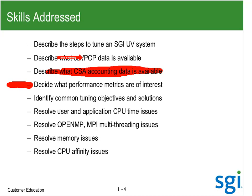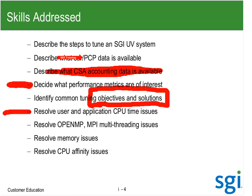One of the key things I want to be able to do is identify common tuning problems, determine an objective, and talk about solutions. This is effectively a two-week class — the second week, the UV Advanced Admin class, gets into memory and IO, while this first week we get into user CPU time and start resolving user and application CPU time issues. We're going to start off with single CPU, then go to multi-threading situations and discuss OpenMP and MPI — in particular SGI's MPI known as MPT. We are not covering Intel MPI or other flavors of MPI in this class.